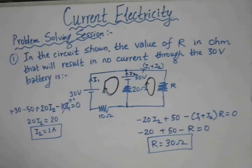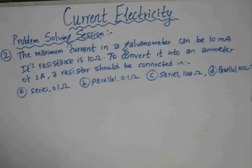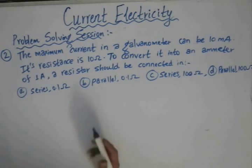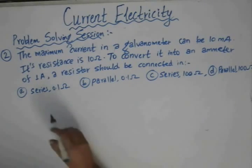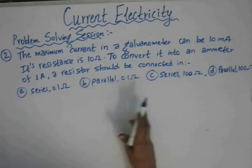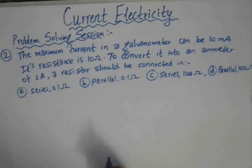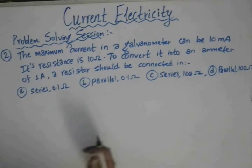Next, we will solve a problem based on the galvanometer — specifically the concept of conversion of a galvanometer into an ammeter. The question: the maximum current in a galvanometer can be 10 milliampere, its resistance is 10 Ohm, and to convert it into an ammeter of one Ampere, a resistor should be connected in — with options: series 0.1 Ohm, parallel 0.1 Ohm, series 100 Ohm, or parallel 100 Ohm. To convert a galvanometer into an ammeter, we connect a shunt resistor of very low value in parallel to the galvanometer.